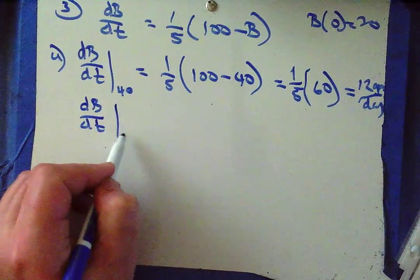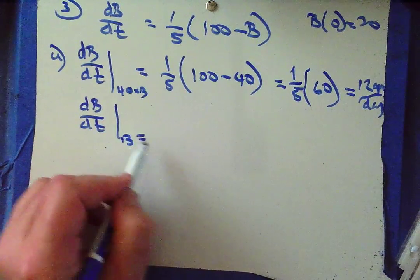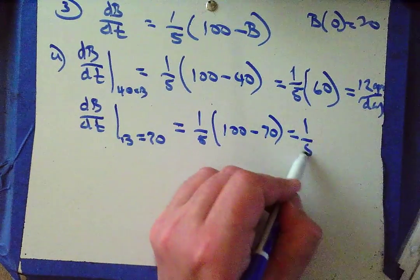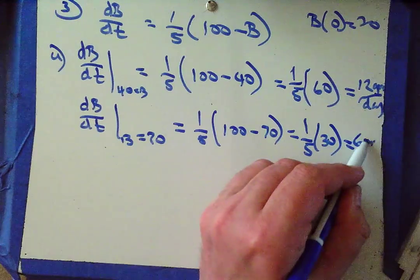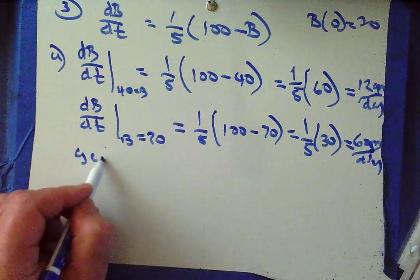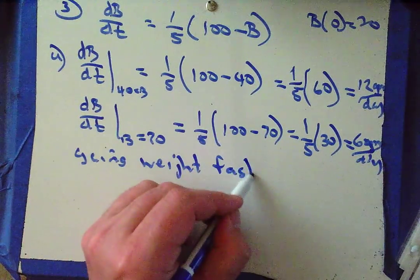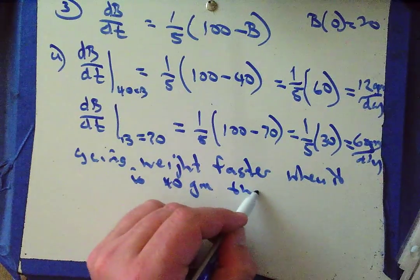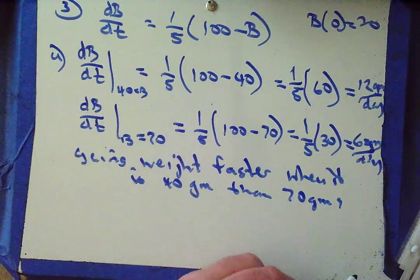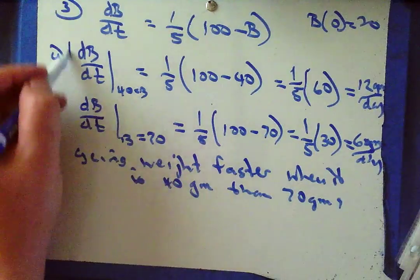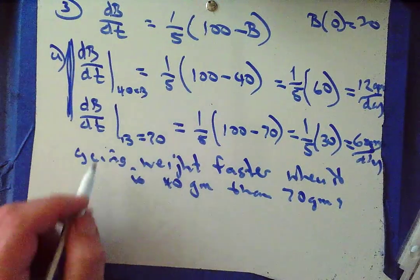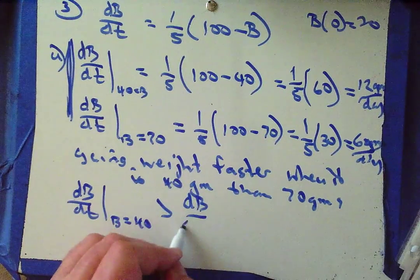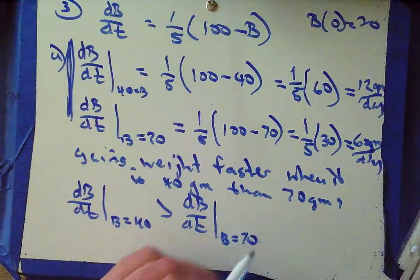And dB/dt when B equals 70 is 1/5 times (100 minus 70), which is 1/5 times 30, which equals 6 grams per day. The bird gains weight faster when it is 40 grams than at 70 grams, and we've shown work to support that. The explanation they're looking for: dB/dt evaluated at B equals 40 is greater than dB/dt evaluated at B equals 70.